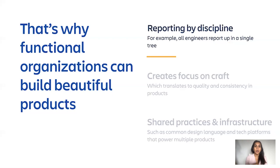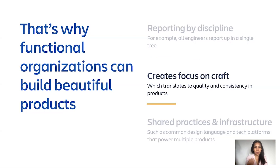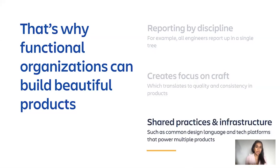Then there are functional organizations where people in a single discipline, like engineering for example, report in a single line. These organizations have a huge focus on craft because people can coach each other, there's shared knowledge, and a deep focus on craft and perfection. The products that come out of functional organizations can be really beautiful and consistent — you can have things like a shared design language, which we have at Atlassian, and platform components like the editor in Confluence and our other products.